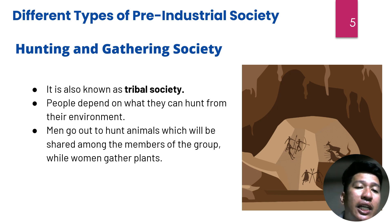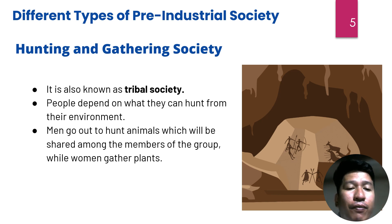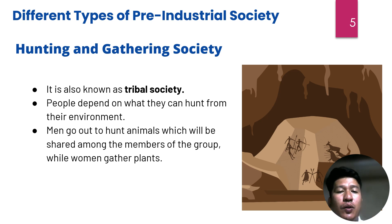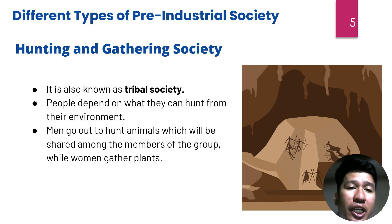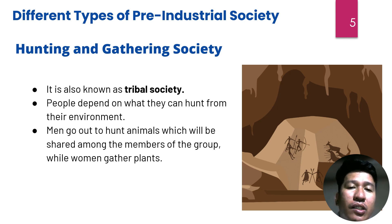In hunting and gathering societies, people depend on what they can hunt from their environment. Men go out to hunt animals, which are shared among the members of the group, while women gather plants. This is a key characteristic of this type of pre-industrial society. Can you imagine what life is like in this society?